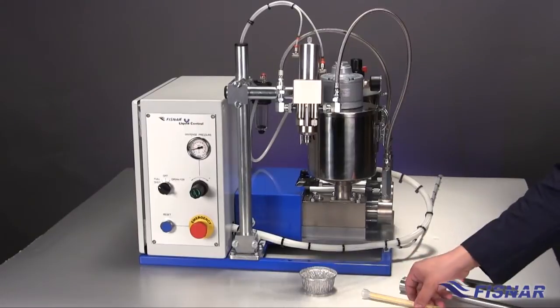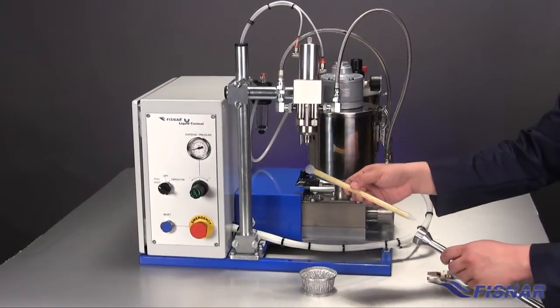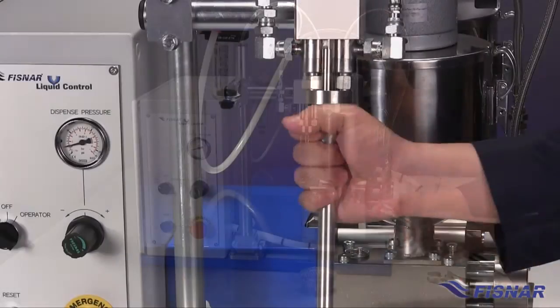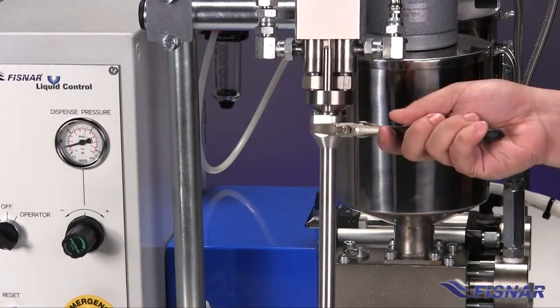The next stage is to install a static mixer and mixer shroud. Install the mixer into the shroud, hand tighten, and finally tighten with an adjustable wrench.